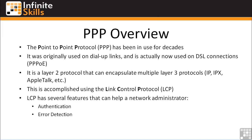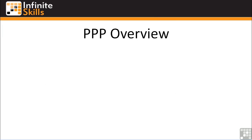The Link Control Protocol has several features that can help a network administrator maintain a well-functioning network. They are: authentication, error detection, multi-link, and loop detection. We'll talk briefly about all four of those over the next few slides, starting with authentication.